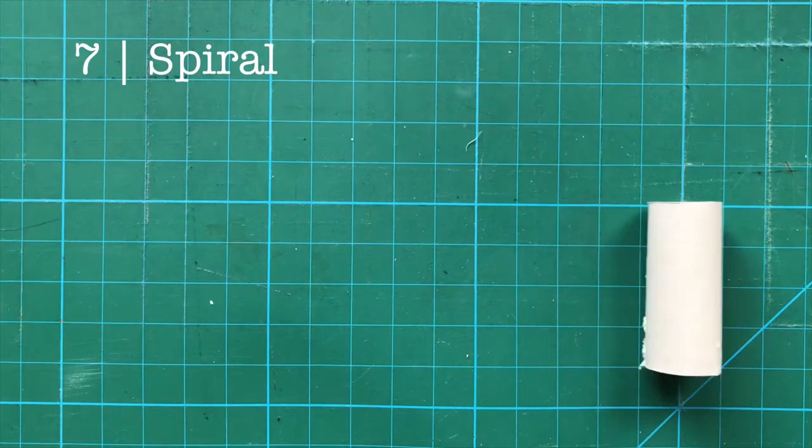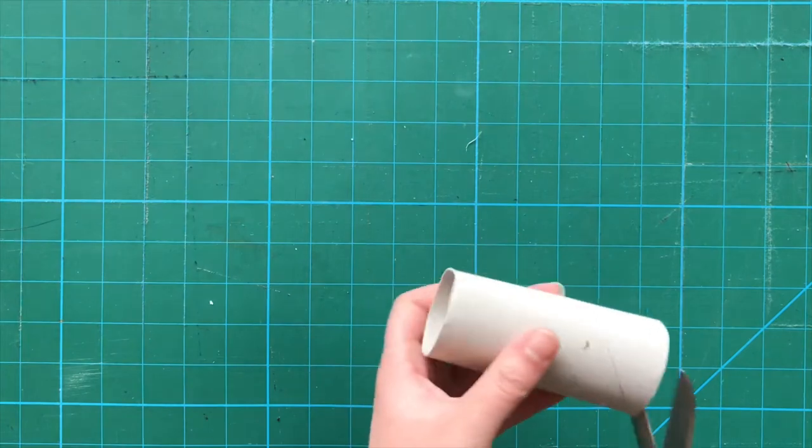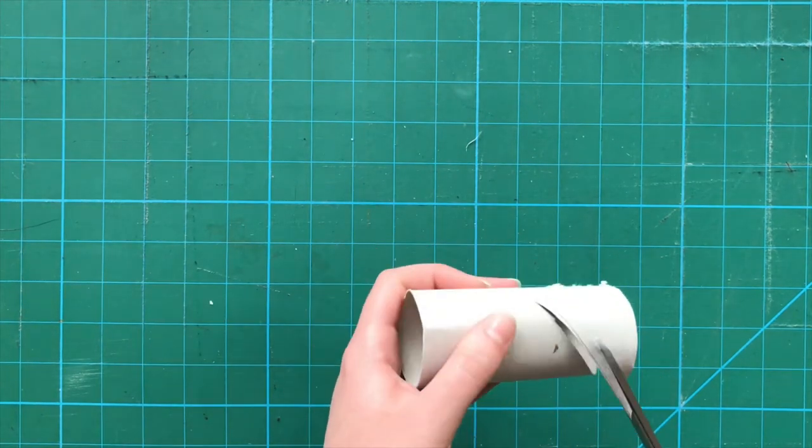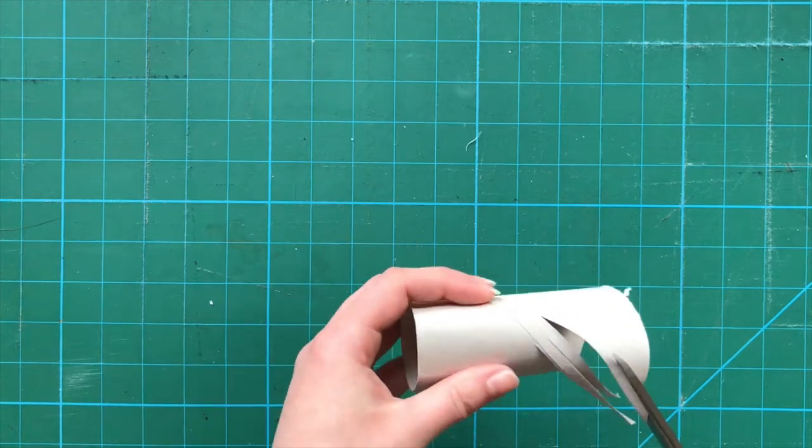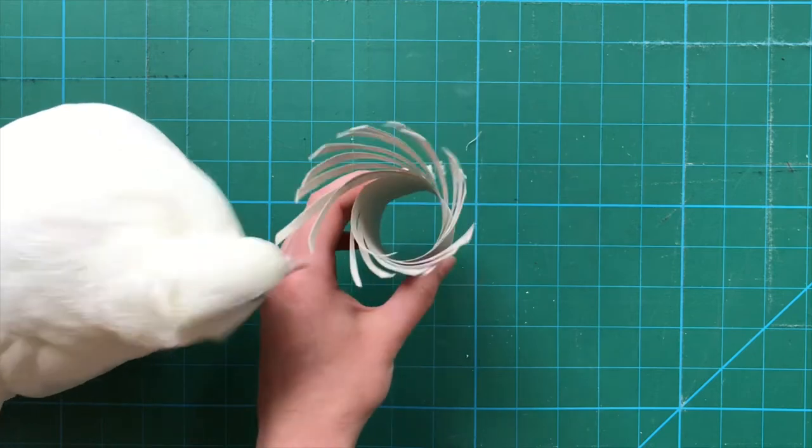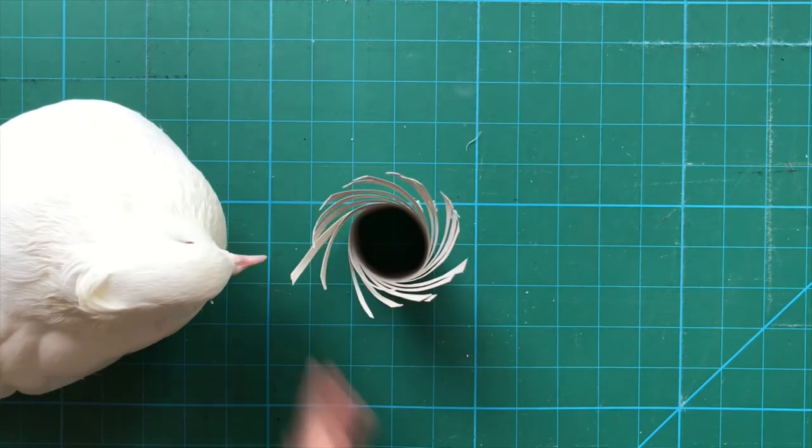Number seven, spiral. Starting with a fresh roll again, find the seam and cut along it, spiraling up to the middle. Continue doing this, cutting each strip to be about a quarter inch. You can give it to the bird as is. Once again this works for foraging and play fighting.